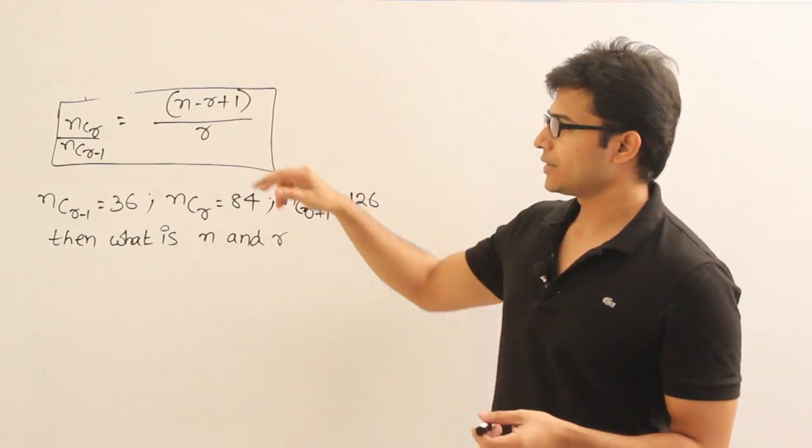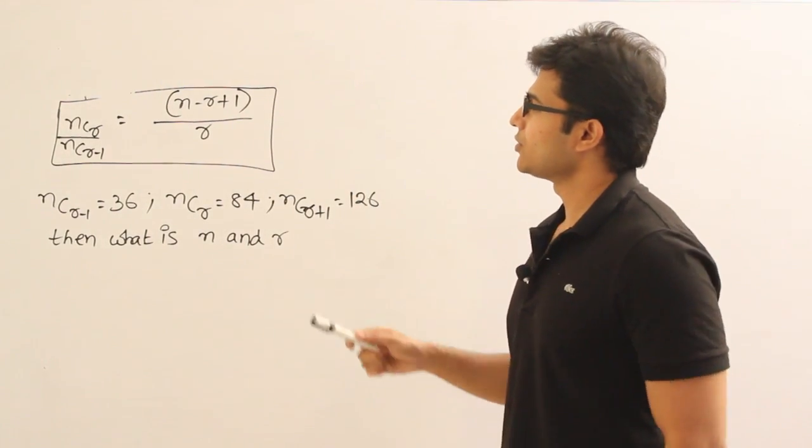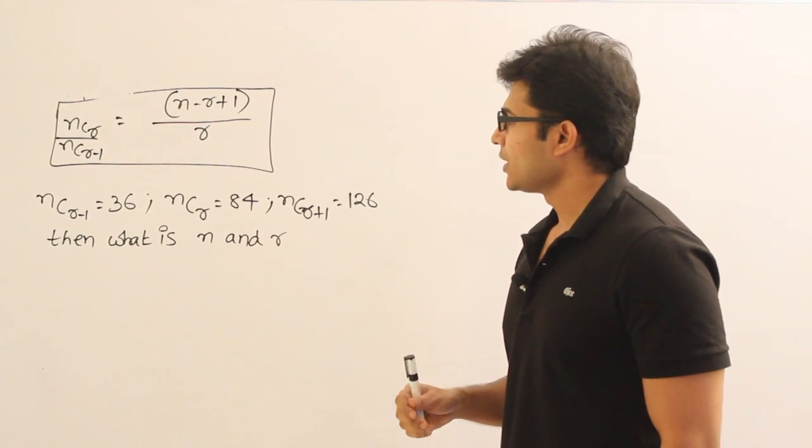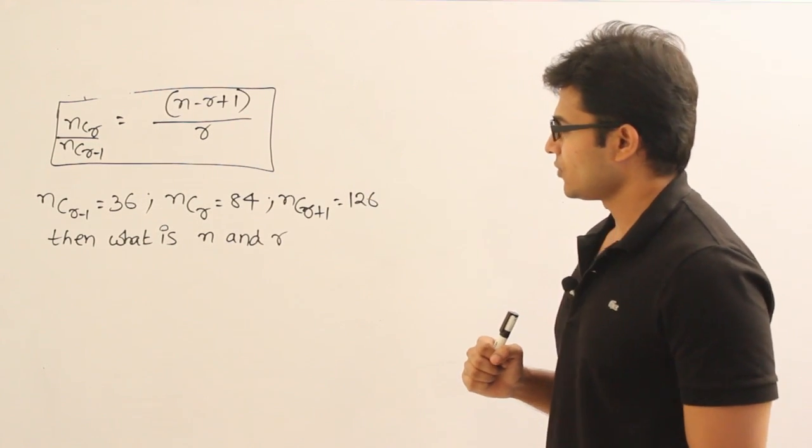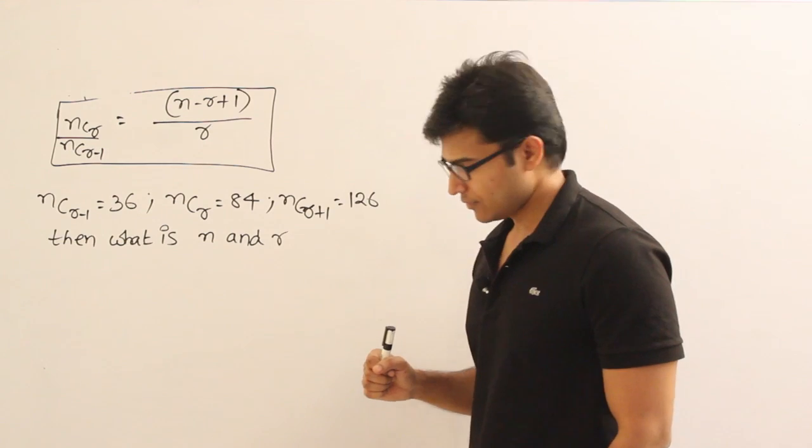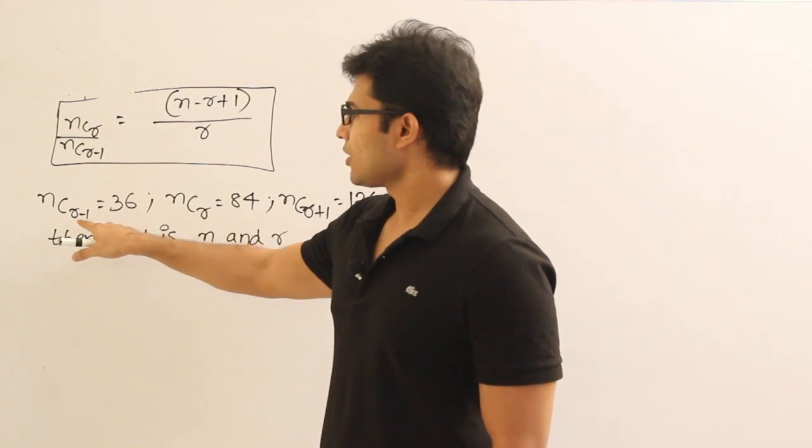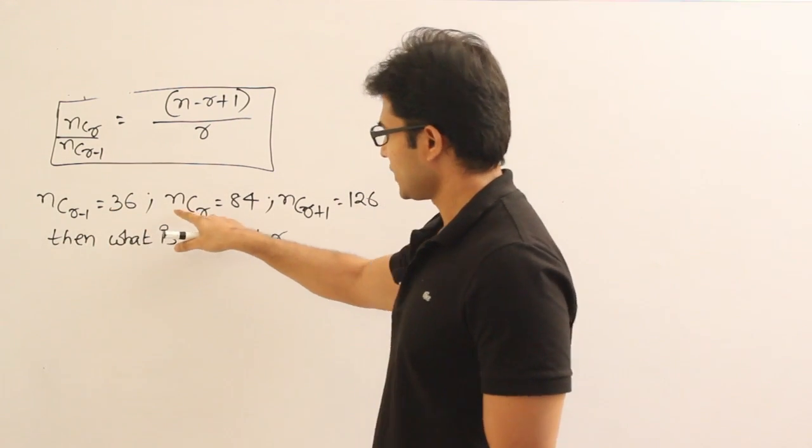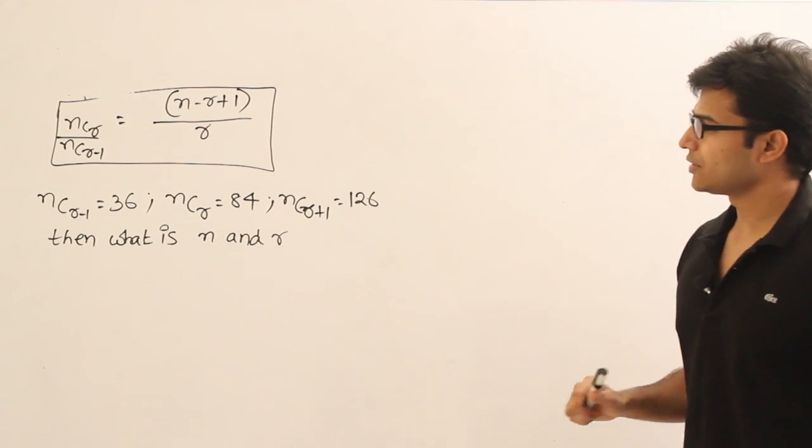Now let's see one problem on this: nCr by nC_(r-1) equal to (n-r+1) by r. So if you observe, we are given three values: nC_(r-1) equal to something, nCr equal to something, and nC_(r+1) equal to something.